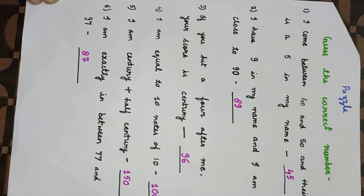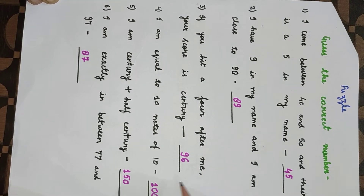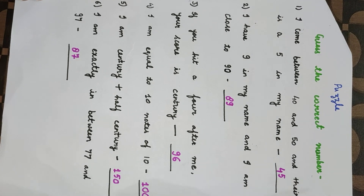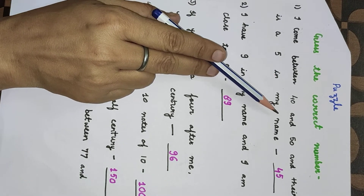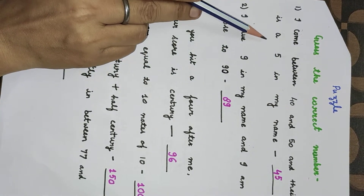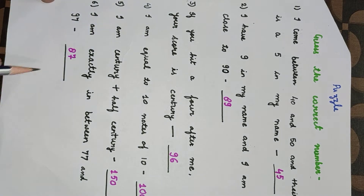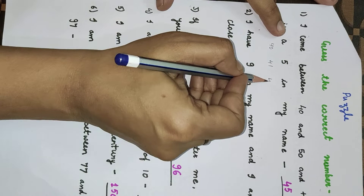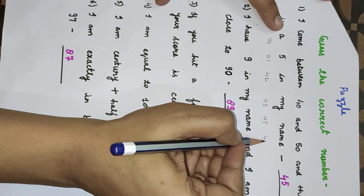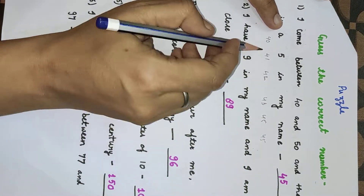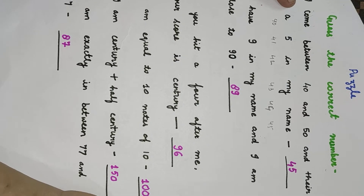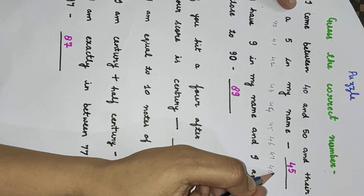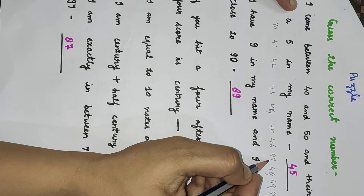Our last topic is puzzles, and here are some puzzles. You have to guess the correct number. Puzzle: I come between 40 and 50, and there is a 5 in my number name. So between 40 and 50 we have: 40, 41, 42, 43, 44, 45, 46, 47, 48, 49, and 50.